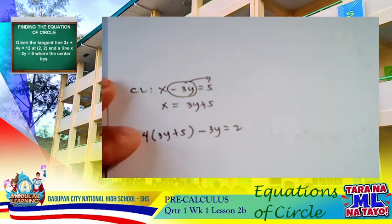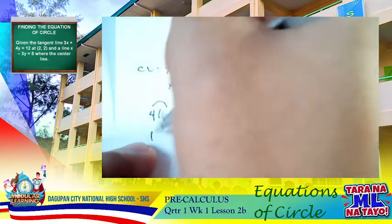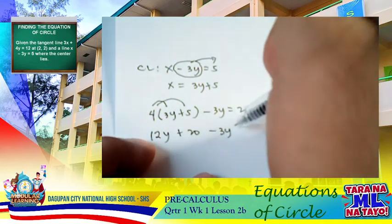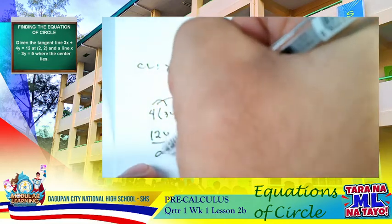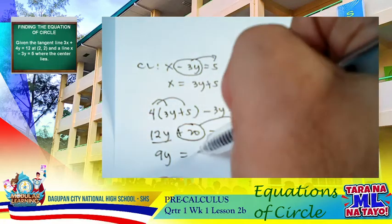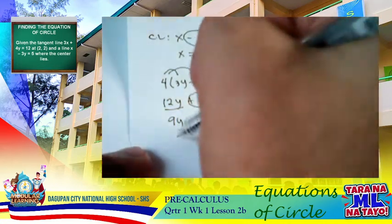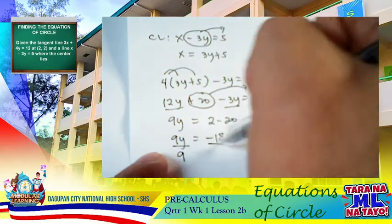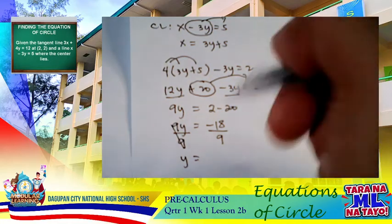Applying the distributive property: 4 times 3y gives 12y, and 4 times 5 gives positive 20, minus 3y equals 2. Combining like terms: 12y minus 3y gives 9y. Transposing the constant: 9y equals 2 minus 20, so 9y equals negative 18. Dividing both sides by 9, our value of y is negative 2.